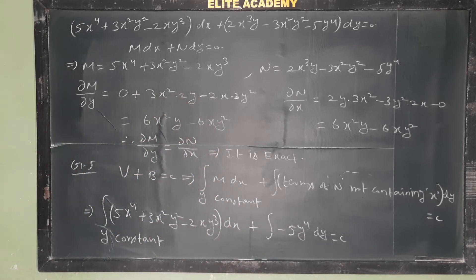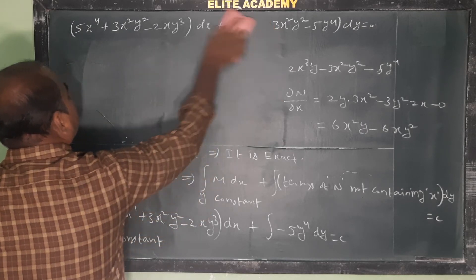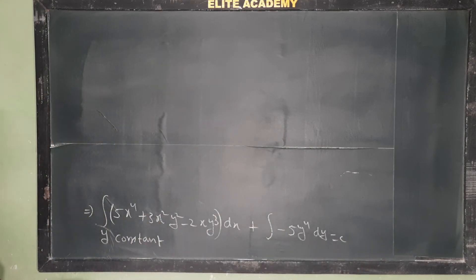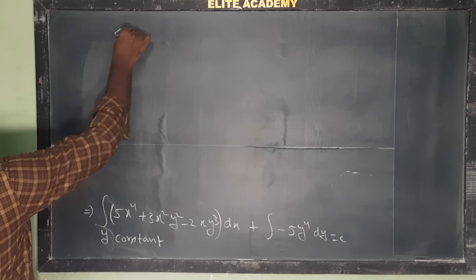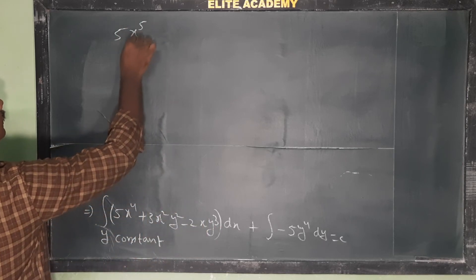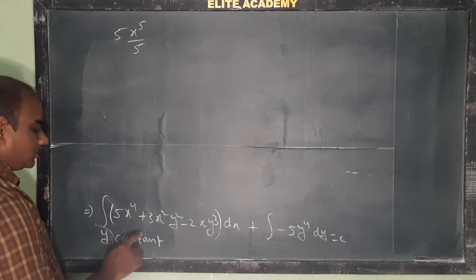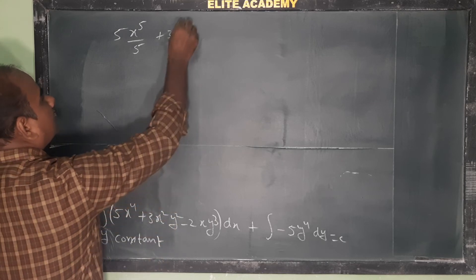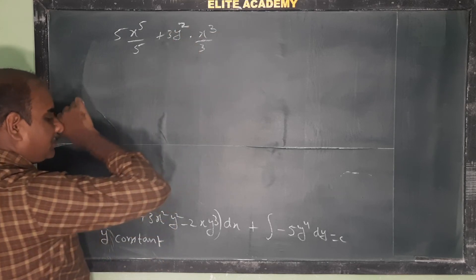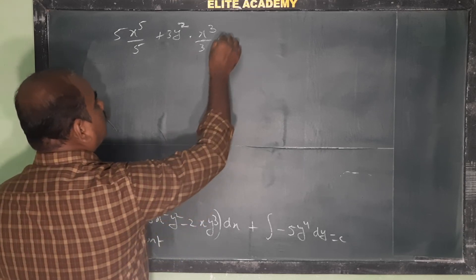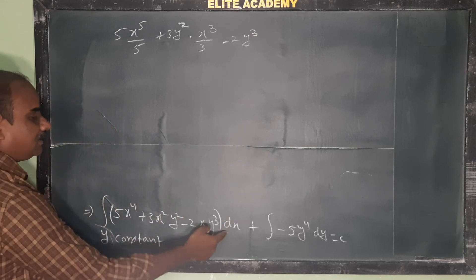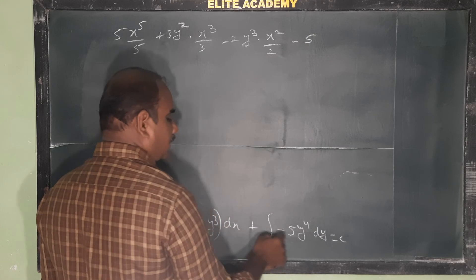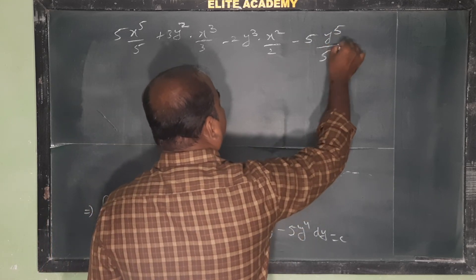Computing the integrals: ∫5x⁴ dx = 5 · x⁵/5 = x⁵. For 3y² (constant) · ∫x² dx = 3y² · x³/3 = x³y². For −2y³ (constant) · ∫x dx = −2y³ · x²/2 = −x²y³. Then −5∫y⁴ dy = −5 · y⁵/5 = −y⁵. Setting equal to c.